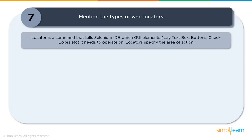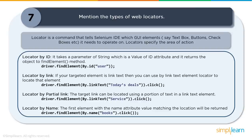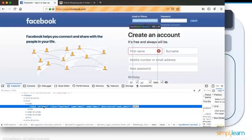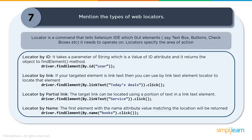Question seven: What are the types of web locators? A locator is a command that tells Selenium which UI element to operate on. Selenium uses locators to find and match elements of your web page. There are around eight locating techniques. First, by ID — the most common way, since IDs are supposed to be unique for each element. For example, on Facebook the email field has a unique ID called 'email', which can be used directly to locate that element.